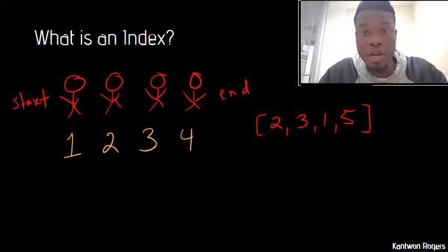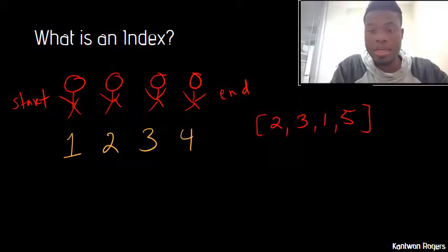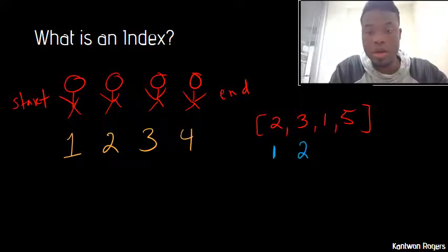This is a vector of four numbers where the indices, so the 2 is in the first index, the 3 is in the second index, the 1 is in the third index, and the 5 is in the fourth index.